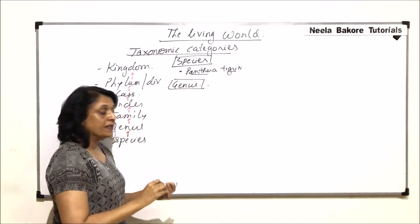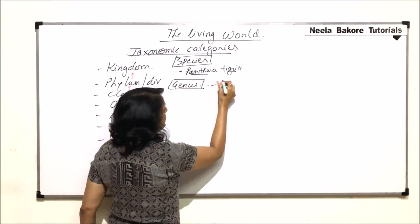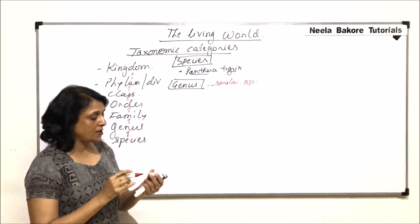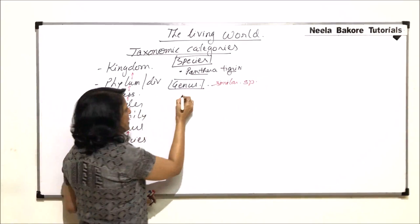What exactly do we mean by genus? Genus is a category or a group which has similar species. So, similar species are placed in one genus.